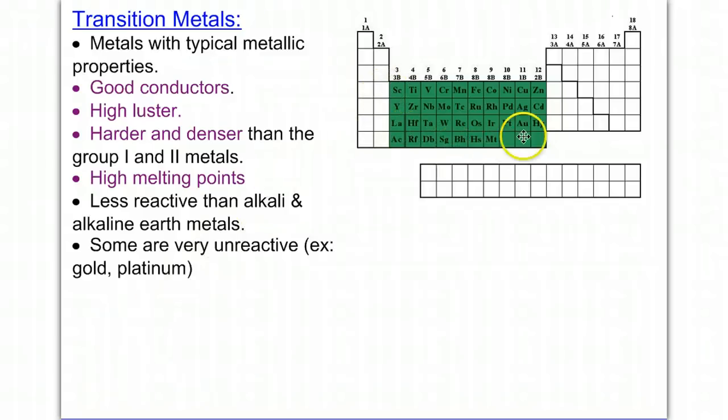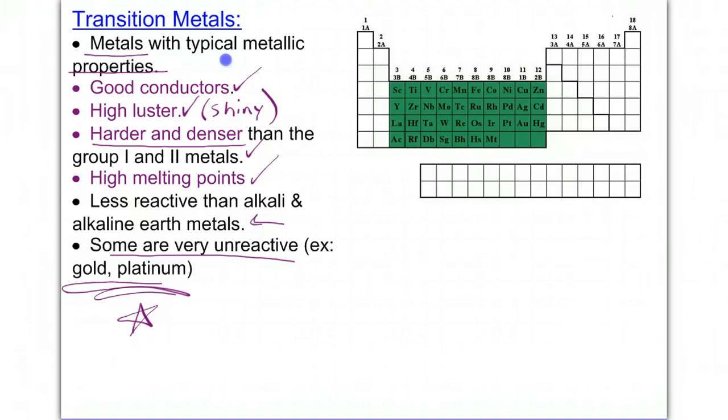Transition metals, which are located in the D block, are metals with typical metallic properties. Metals tend to be good conductors of heat and electricity. They have a high luster, which means they're shiny. They are harder and denser than the group 1 and group 2 metals, and they also have high melting points. Transition metals are less reactive than alkali and alkaline earth metals, and some of them are very unreactive. Gold and platinum are the most unreactive metals. As you move from left to right in your metals section, they become harder, stronger, and denser, but they also become less and less reactive.